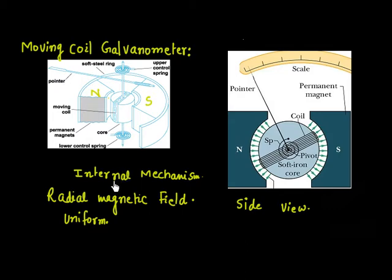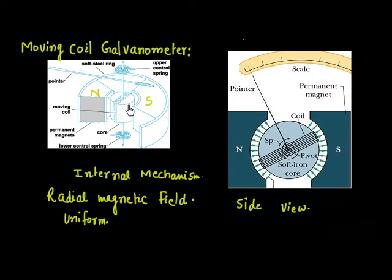Now let us see how this works. This contains a loop, and this is an iron core — a cylindrical kind of thing — with wire loops wound around it. These wires can be iron or copper, basically any conductor. The lower end of this rod is a pivot, and the iron core is fixed in a rod. The lower end of the rod is connected to a torsional spring, and on the upper side it is also connected to a spring. So if you try to rotate this iron core, these two springs will try to oppose — that is why these are called torsional springs.